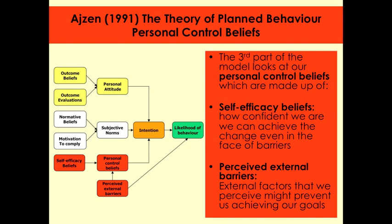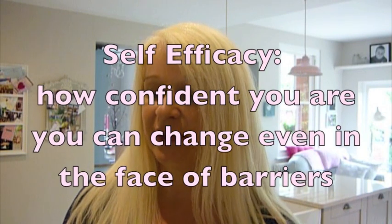The red section is your personal control beliefs, made up of two things: self-efficacy beliefs and perceived external barriers. Self-efficacy means how confident you are that you can change, even in the face of barriers — it's about your self-confidence in your own abilities. If you've got high self-efficacy beliefs, you're confident you can change anything you want. In terms of smoking, someone with high self-efficacy would say: yeah, of course I can give up, it's dead easy. Someone with low self-efficacy would say: I'm never going to give up, I'm so addicted, all my friends smoke — no self-belief they can quit.